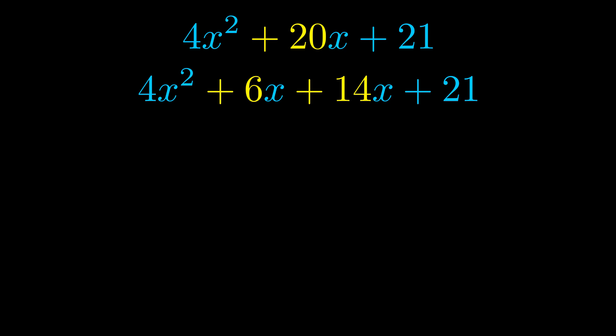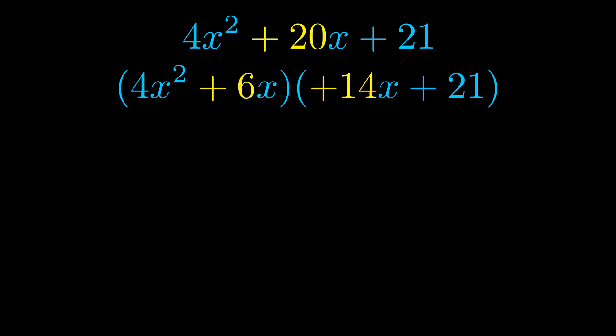Once we've done this we go ahead and we put parentheses around the first term and the last term. And we do that so that we can take the greatest common factor out of both terms. We can see the greatest common factor is now outside in green. Notice also how what remains inside of the parentheses is the same in both cases.